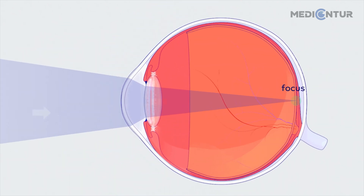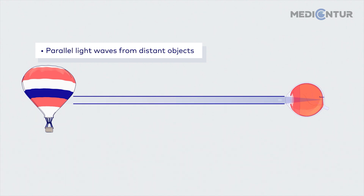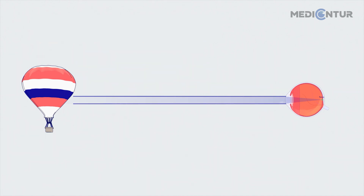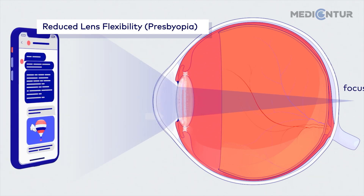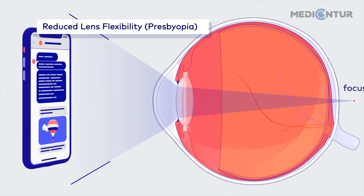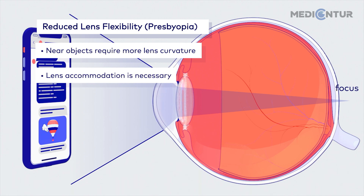Incoming light from far away objects enters the eye in a parallel pattern. Here, the pupil is wide open and the lens is in a relaxed state. Light from close and intermediate objects, however, enters the eye in a converging pattern. Therefore, the lens needs to increase its curvature to focus light on the macula.